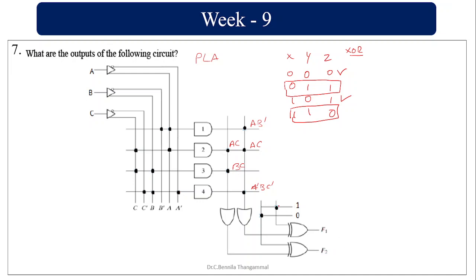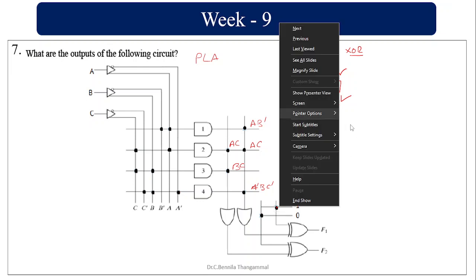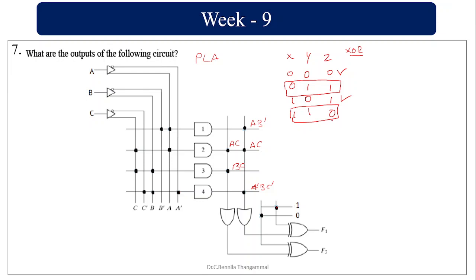For F1, one input is 1, so the output is the complement of the other input. The other input is AB̄ + AC + ĀBC̄, so F1 is the complement of that whole expression.